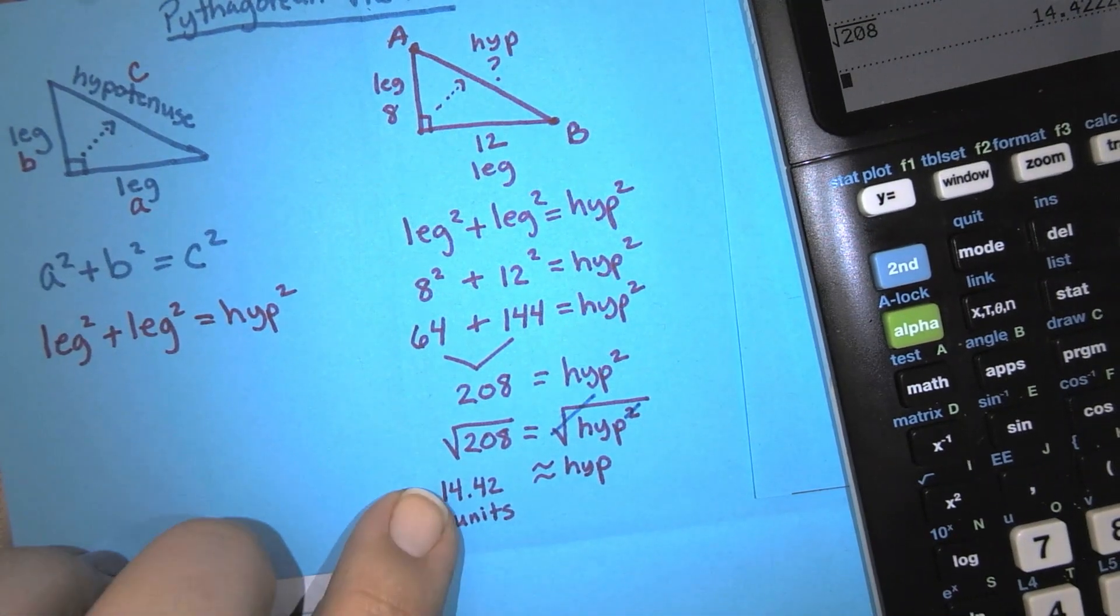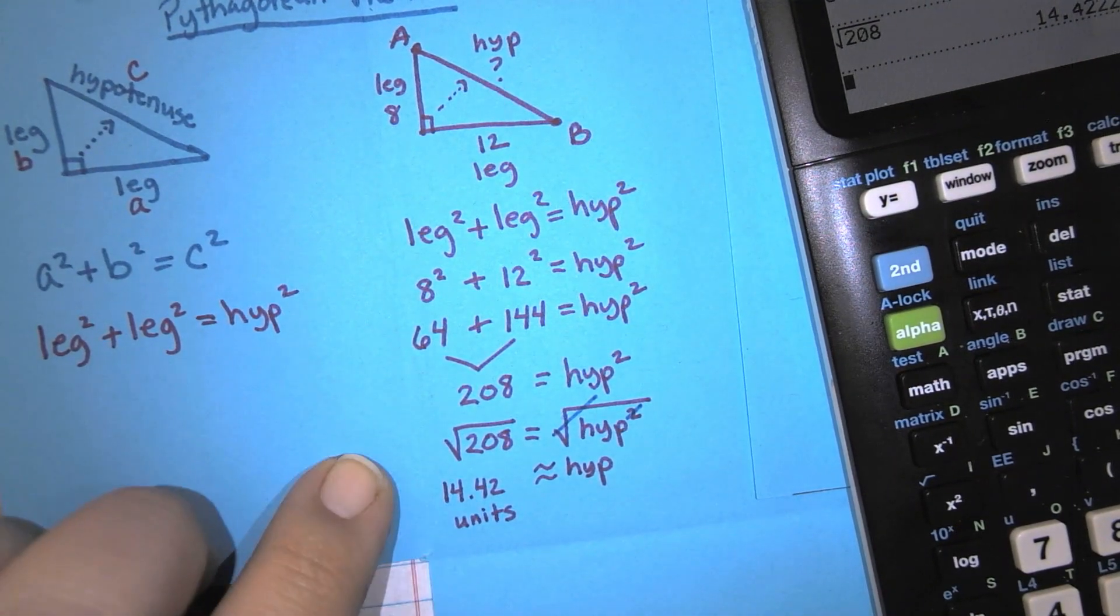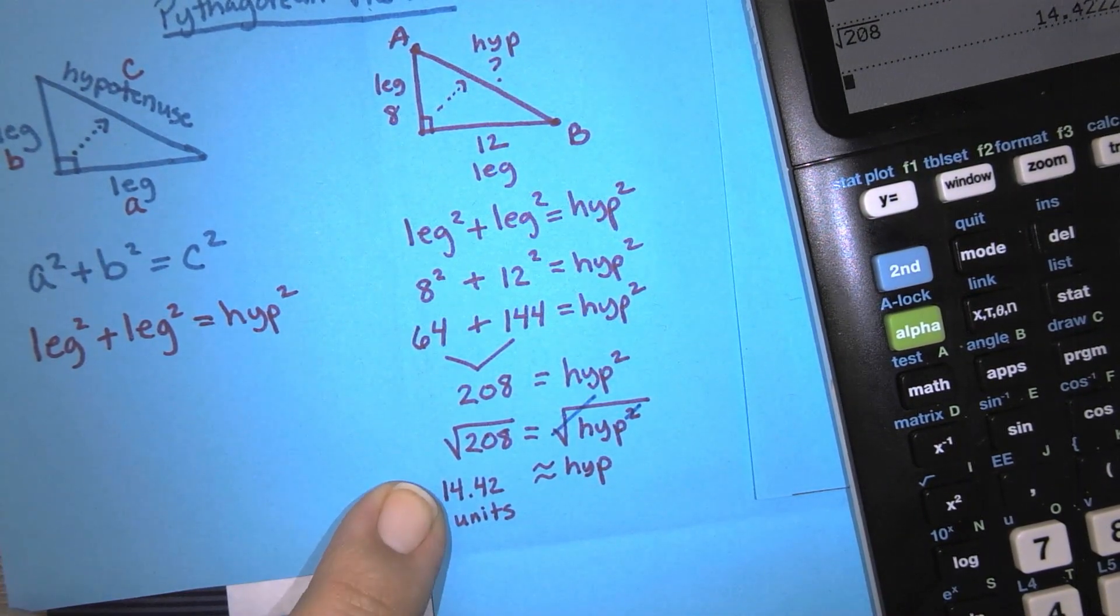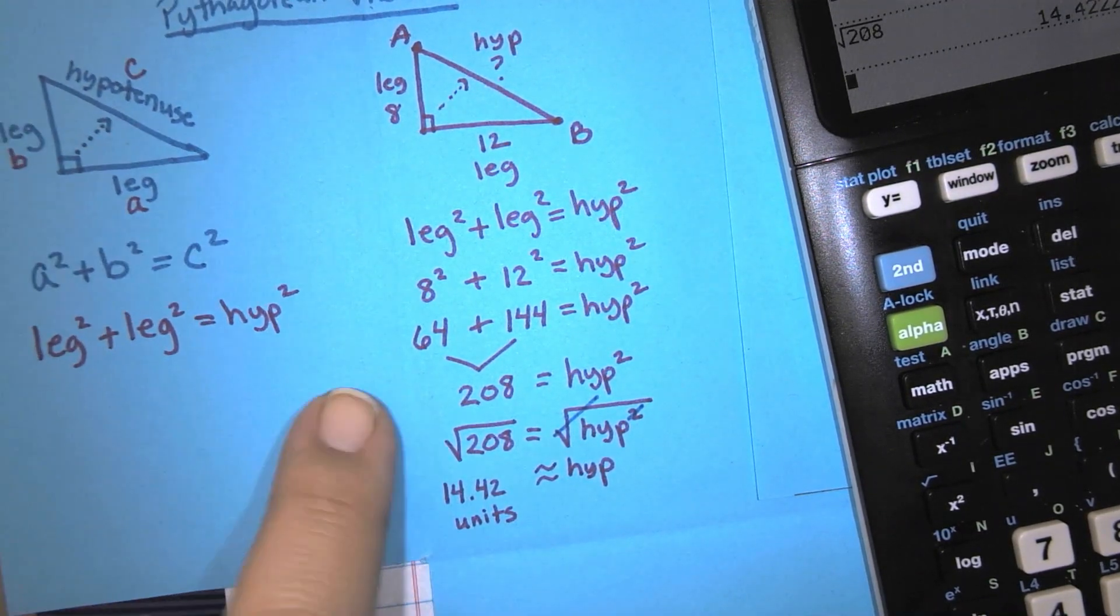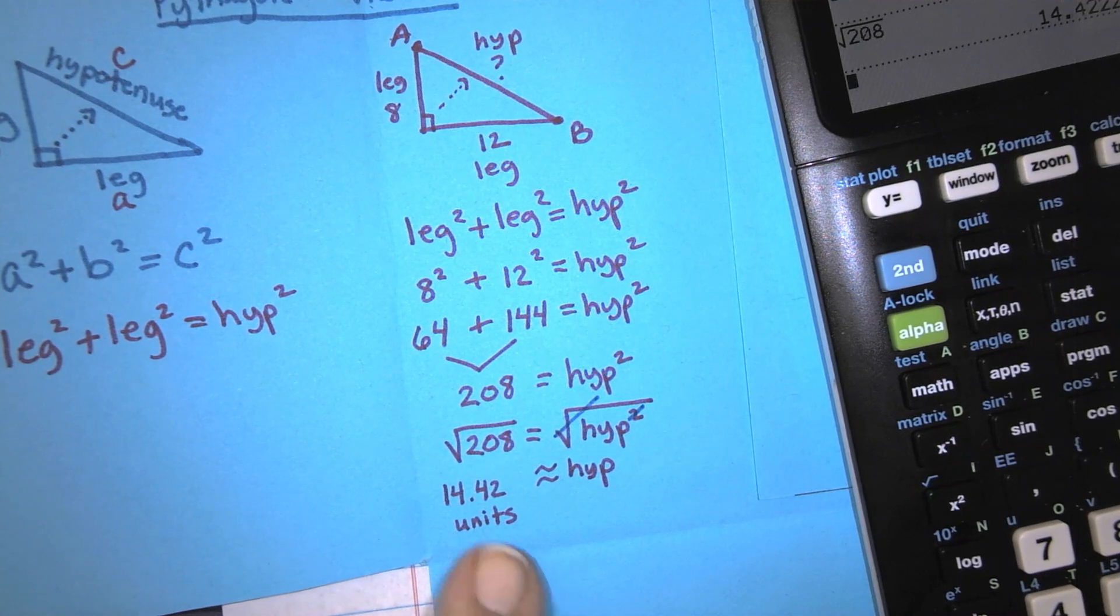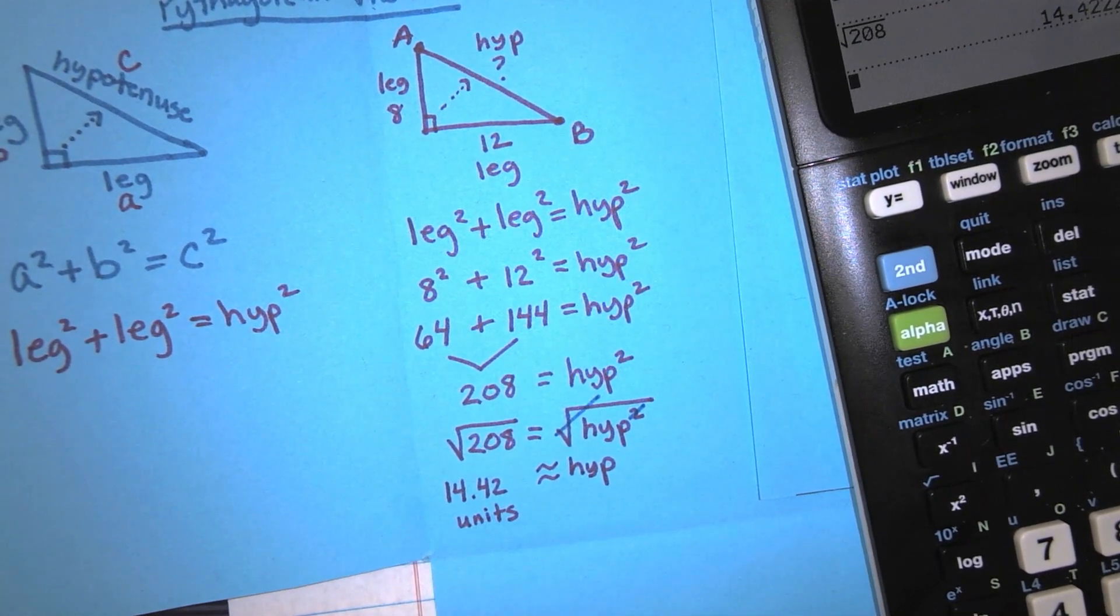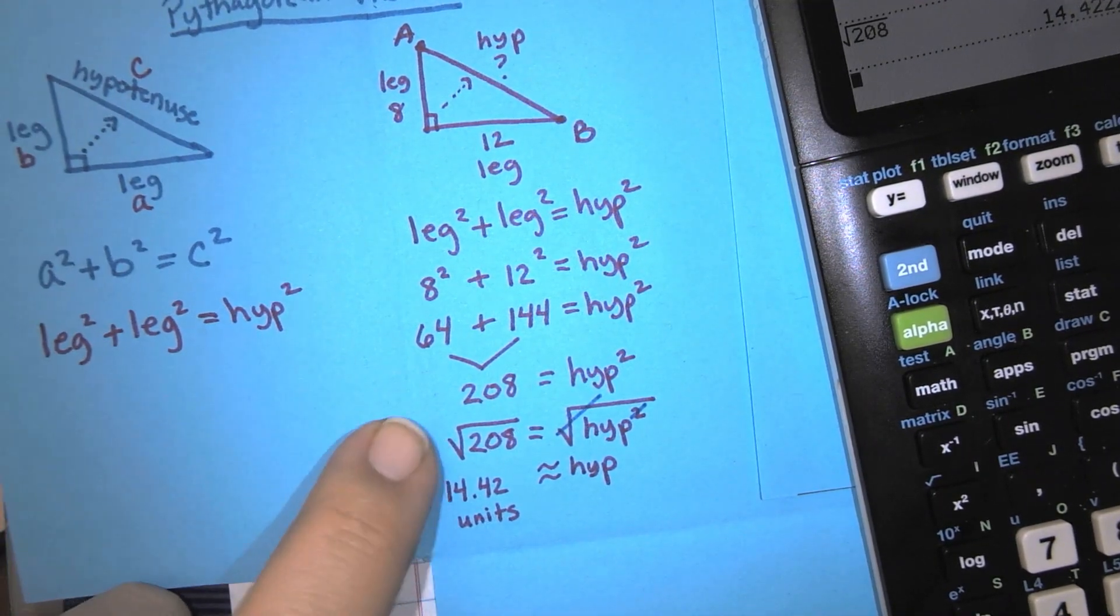I never would have been able to calculate that or count it, to know that it was 14.42 boxes of counting them on the graph. So I had to use a formula to calculate it. I can't approximate 0.42 of a box. I can't even do the square root in my head.